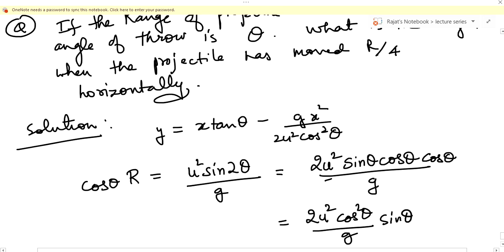And why have I done this? Because this expression 2 u squared cos squared theta upon g is present here. Just see.